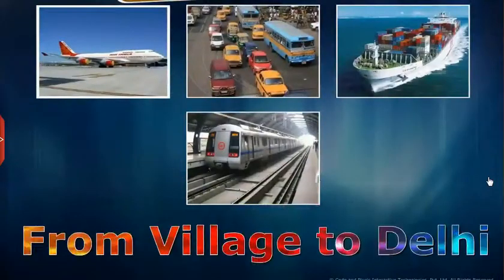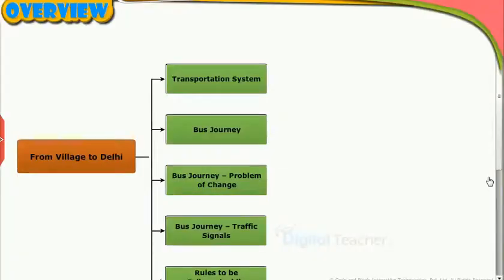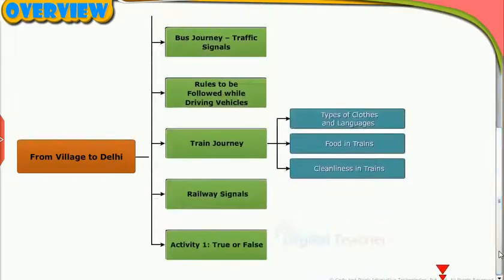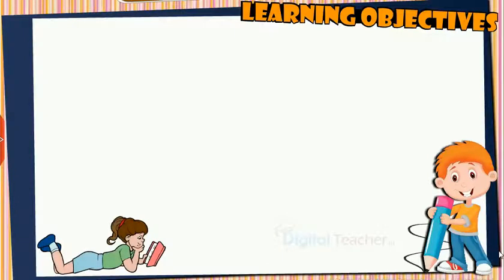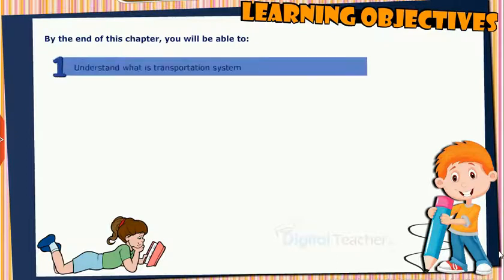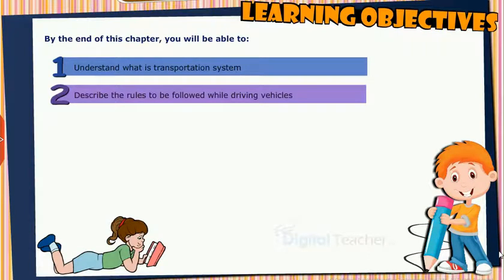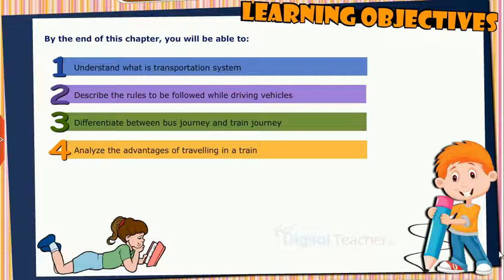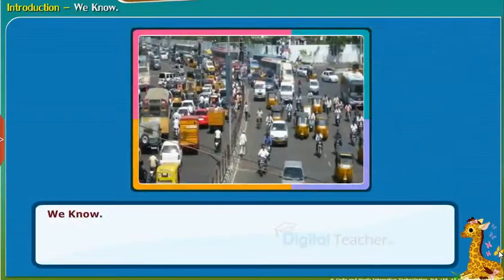Welcome to the chapter 'From Village to Delhi.' This slide presents the overview of the chapter. Learning Objectives: By the end of this chapter, you will be able to understand what is a transportation system, describe the rules to be followed while driving vehicles, differentiate between bus journey and train journey, and analyze the advantages of travelling in a train.